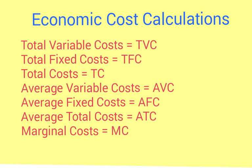Here are the seven economic costs we distinguish in economics. The first one is total variable cost, or TVC. Total variable costs are costs associated with variable inputs — usually labor, the number of workers we hire, office supplies, raw materials, and energy used to operate your business. Variable costs increase as you produce more products.